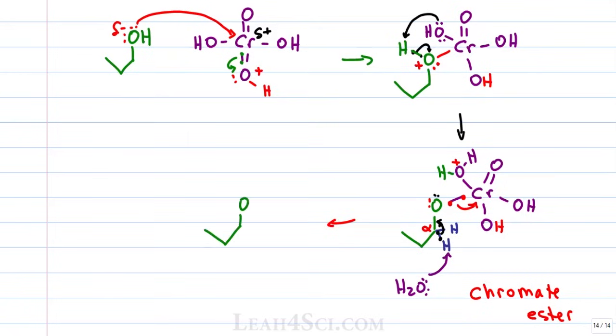This gives us our product which is an aldehyde but it's not our final product. If you started with a secondary alcohol, instead of a hydrogen you would have an R group and this would be a ketone your final product but because we have another alpha hydrogen we can do the entire mechanism again to get a carboxylic acid.